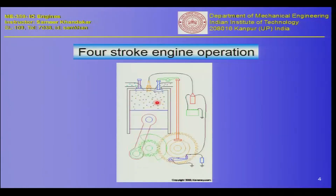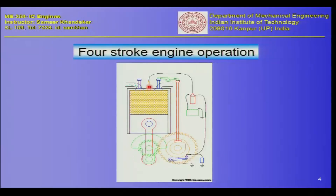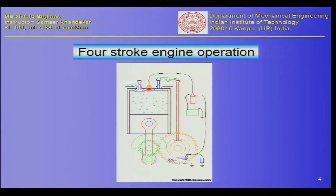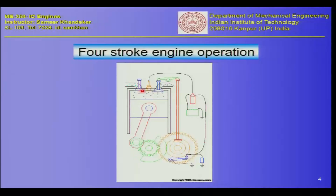In a diesel engine there is no spark plug — ignition takes place just because of the compression, bringing the temperature to a level where the charge ignites by itself, which we call auto-ignition. But in a petrol engine an external energy source is needed — a spark plug. The spark plug generates a high-voltage spark that ionizes the air locally, and this spark ignites the compressed mixture around it, starting combustion.